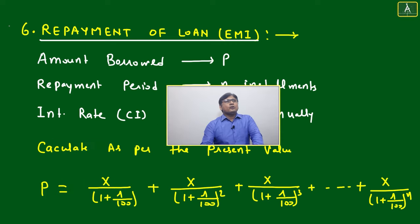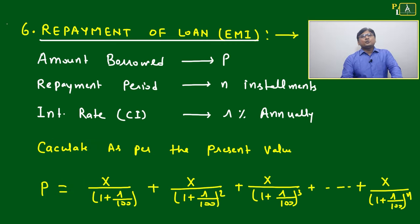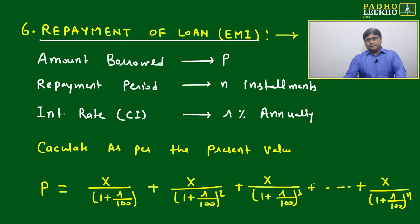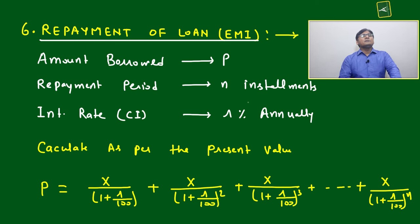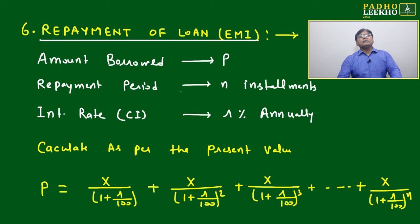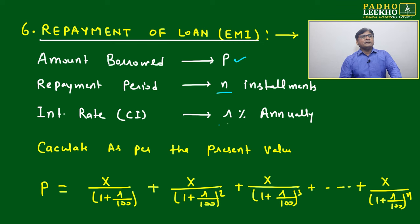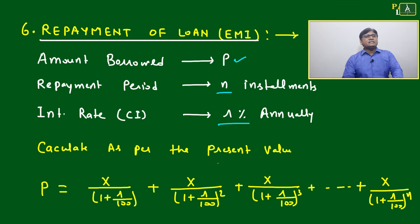One more terminology related to compound interest is repayment of loan. This will always be calculated in CI, not SI — all loan amounts are calculated using compound interest. Let's take an example: amount borrowed is P, repayment period is n, installment is x, and interest rate is r percent annually.